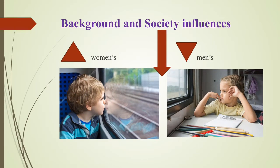Imagine two children on a train that stops at a station. Each child looks out from a window and identifies their location. One child says they are in front of the door for the men's room; the other says they are in front of the door for the women's room. Both children see and use a label from their seating positions to describe where they are. Both are on the same train but describe where they are differently. Like the two children, we are positioned by our background and by society, which influences how and what we see, and most importantly, what it means.